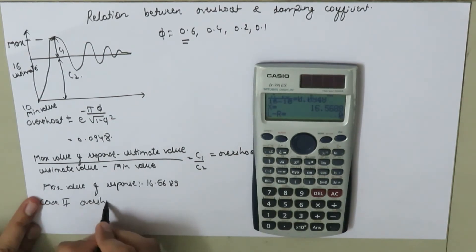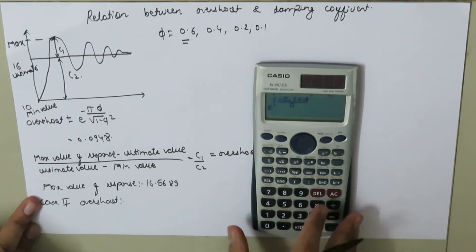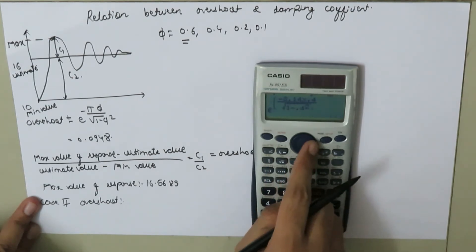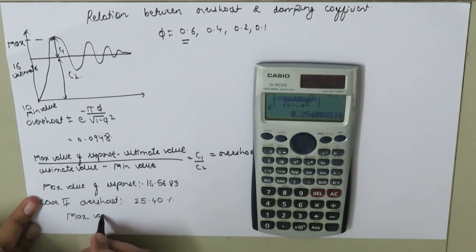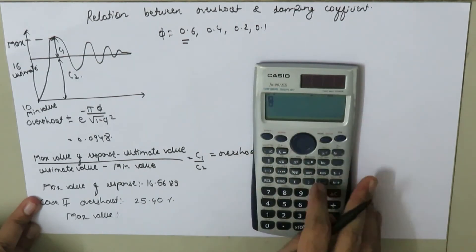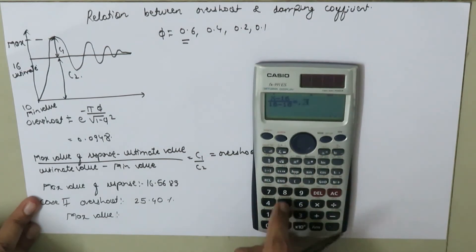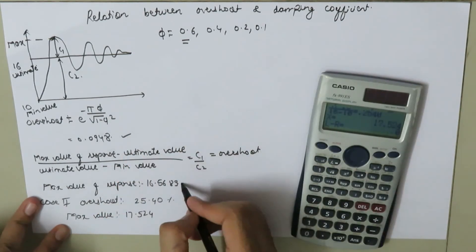For case 2, the overshoot equals e to the power of negative pi times 0.4, divided by the square root of 1 minus 0.4 squared. The overshoot is 25.40 percent. The equation x minus 16, divided by 16 minus 10, equals 0.2540 gives us a maximum value of response of 17.524.